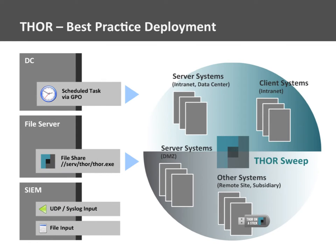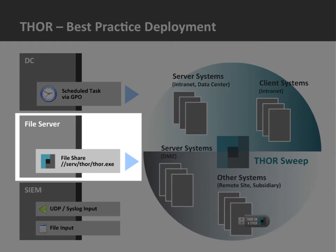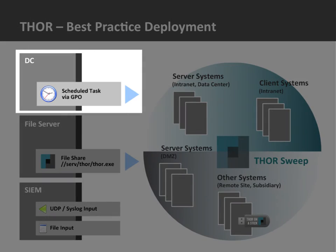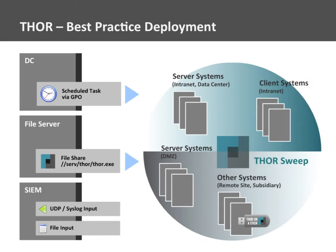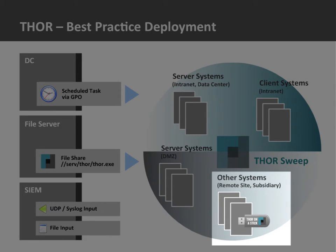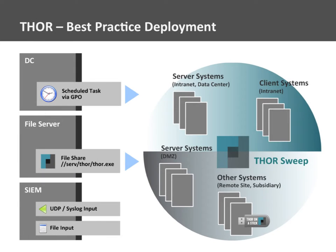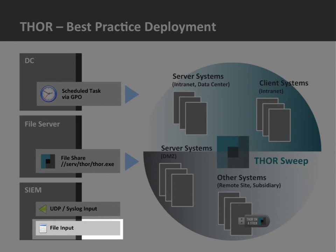Thor is a very flexible tool. You can distribute and run it using the preferred method in your organization. Some use their software distribution and management software like SCCM. Others use a set of batch or PowerShell scripts. We recommend execution from a file share — you can even run Thor via a UNC path without mounting a network drive. You can then schedule a task via group policy and collect the results in a central SIEM system. On remote locations or inaccessible DMZ networks you can run Thor locally and collect the text log files for central analysis.